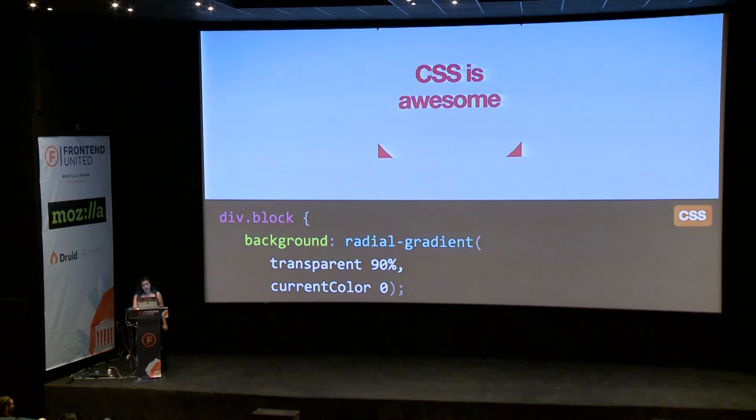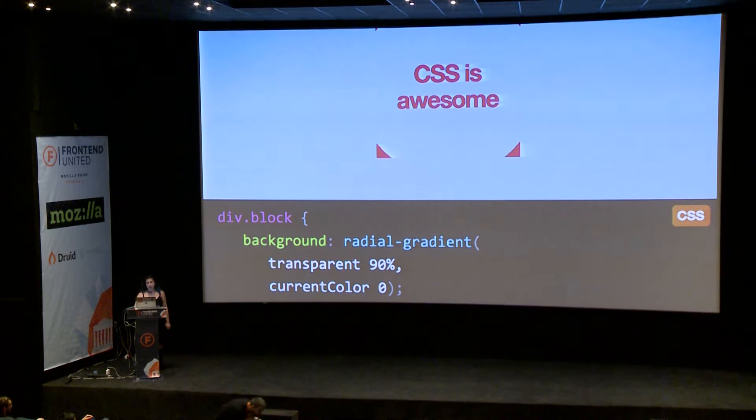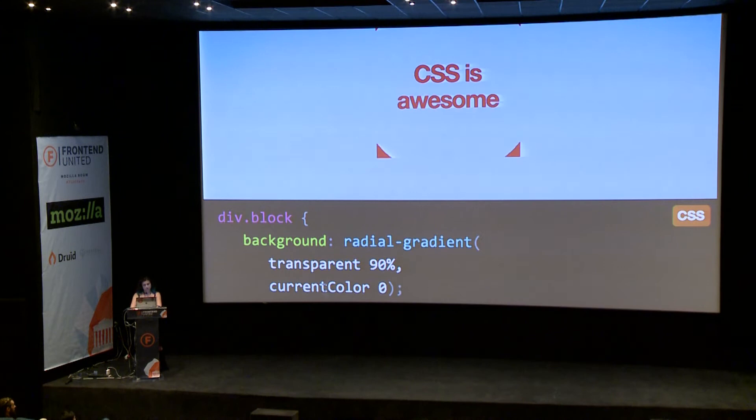So, the first ever CSS variable of sorts was currentColor. currentColor always corresponds to the value of the color property, regardless of how it's set — it could be set by an inline style, by another rule, another style sheet. So as you can see here, if I change the color, the gradient is updated. I can put whatever color I want here and it just works.